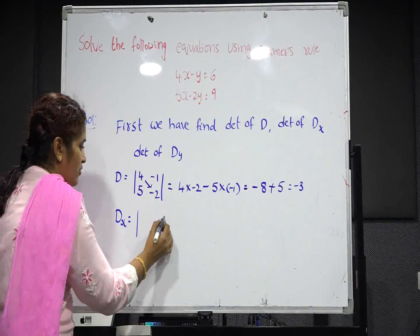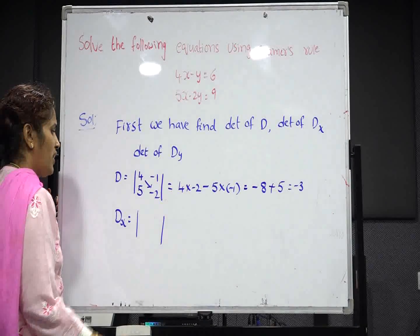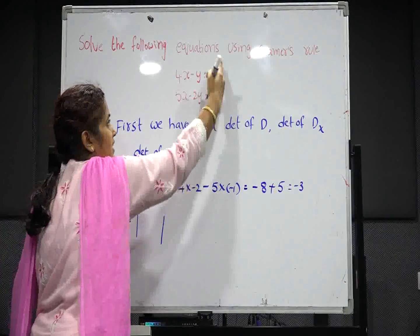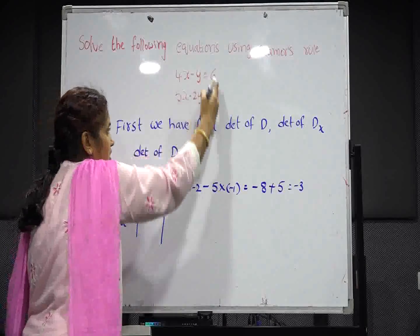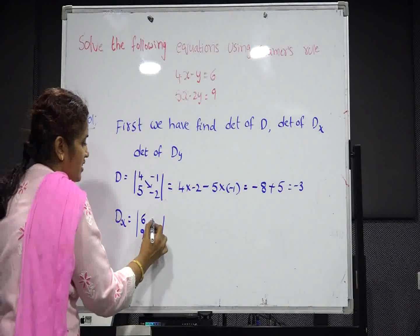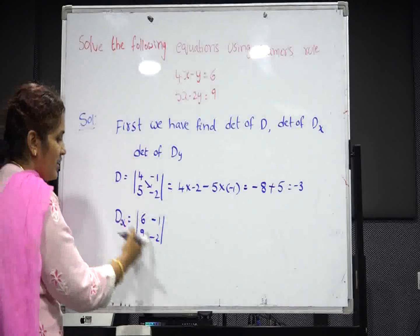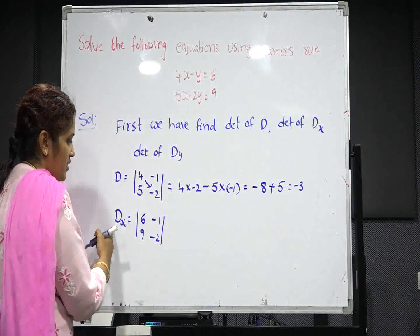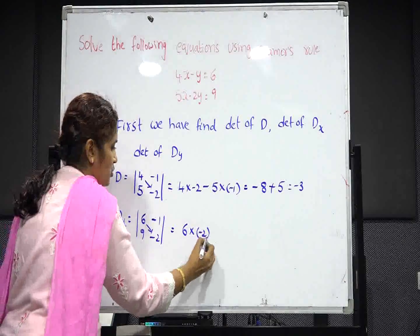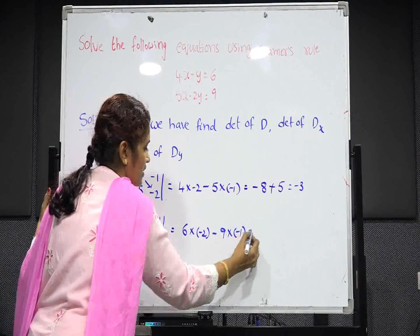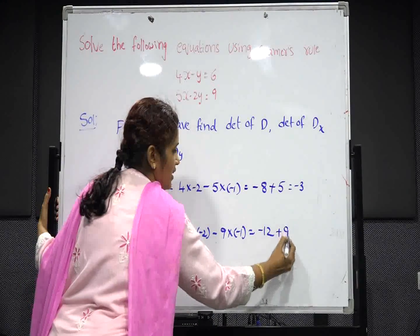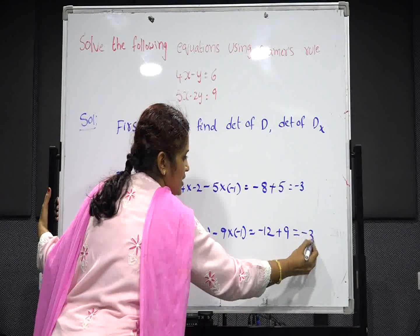Now write the value of Dx. Replace the first column in D with the right-hand side constants — that is 6 and 9. Write the second column in D as it is — that is minus 1 and minus 2. Find the determinant of Dx using AD minus BC: 6 multiplied by minus 2 minus 9 multiplied by minus 1. That is minus 12, and minus times minus gives plus 9, so minus 12 plus 9 equals minus 3.